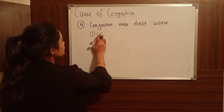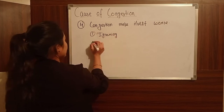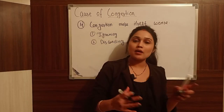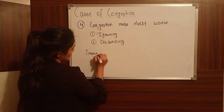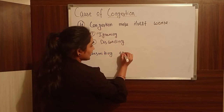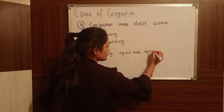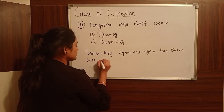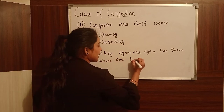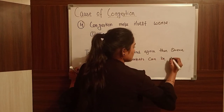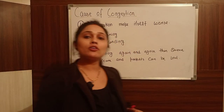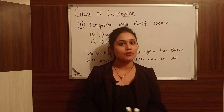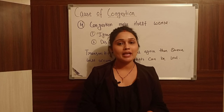So the reason congestion makes itself worse is that packets are being ignored and discarded. The queue builds up and packets can be lost. So these are the four reasons why congestion occurs. In the next video, we will see the control of congestion. Thank you so much.